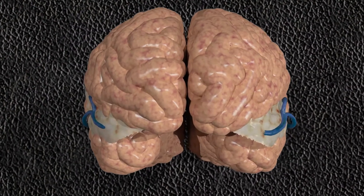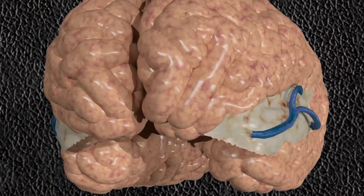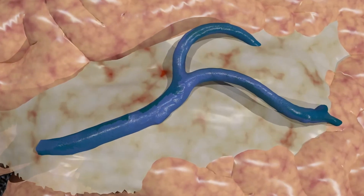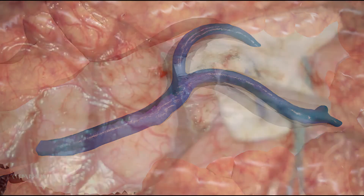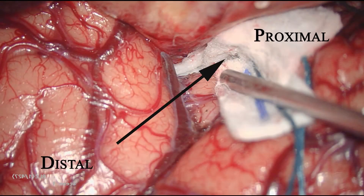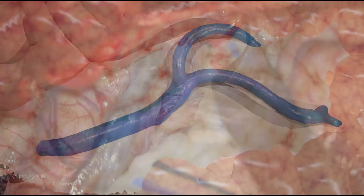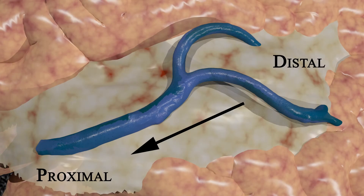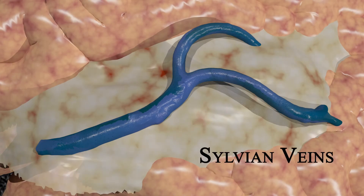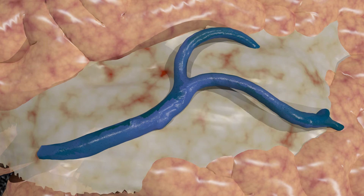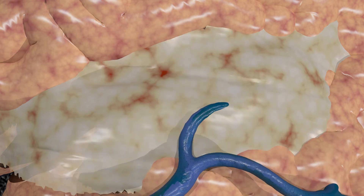To begin with, using a round arachnoid knife and gentle suctioning, the sylvian cistern is incised from the distal portion of the sylvian fissure. The majority of surgeons undertake a distal to proximal approach in order to expose the early branches of the middle cerebral artery. The sylvian veins are gently retracted to the temporal lobe side of the fissure in order to prevent collateral damage.